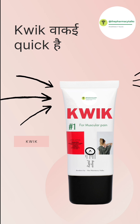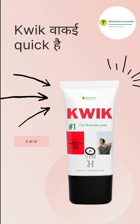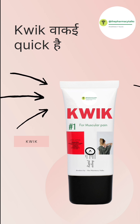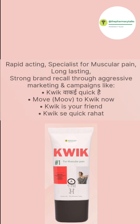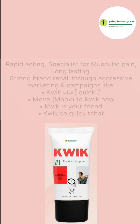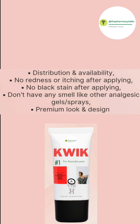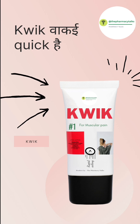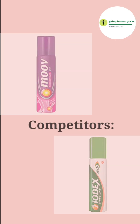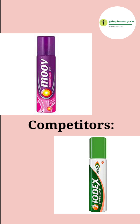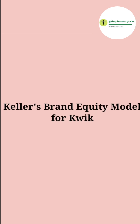Now let's discuss about it in more detail with an example. Assume that we launched a new muscular pain analgesic product in the market with the brand name Quick. After 3 years we are very strong in the muscular pain analgesic segment due to the attributes of our product and our strong and aggressive marketing. We are giving tough competition to Move, IODX, and other analgesic brands. So let's understand Keller's brand equity model for our brand Quick.